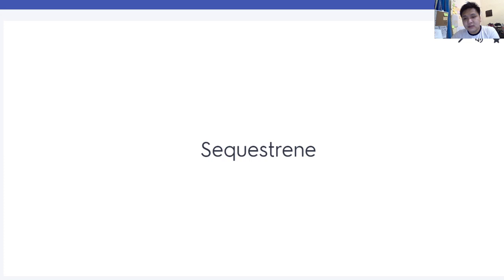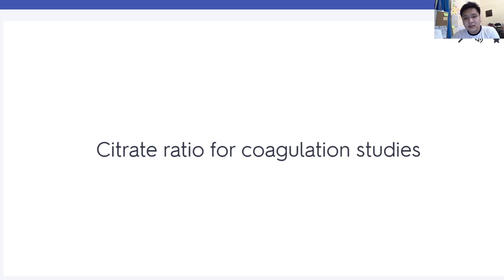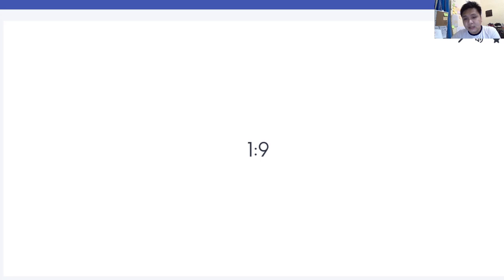1 is to 9 — this is the preferred ratio for your citrate tube, and this is used for coagulation studies. Please remember, your ratios are reversible. When you're asked what is the anticoagulant to blood ratio, it's 1 is to 9. But if you're asked what is the blood to anticoagulant ratio, it's 9 is to 1.